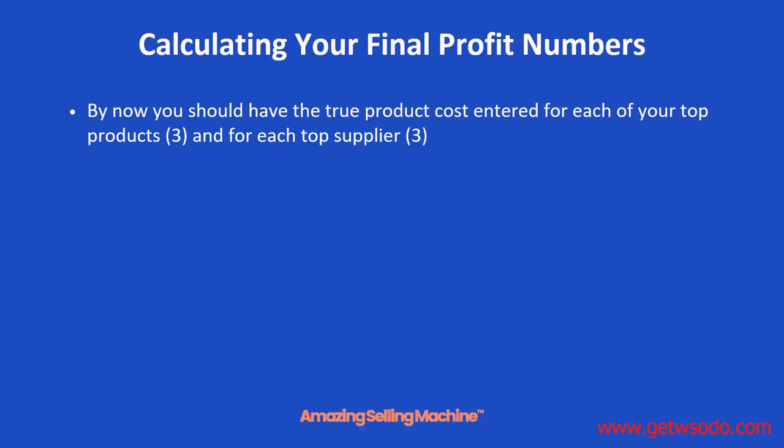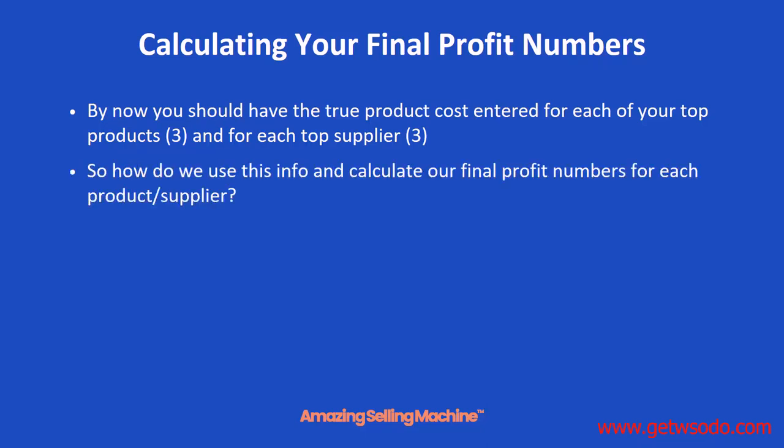By now, you should have captured the true product costs and entered them into the product opportunity spreadsheet for each of your top products — and we should have had three of them. For each of your top suppliers, we should have three of those for each product, so nine entries in total. But how do you use this information when calculating your final profit numbers for each combination of your product and supplier?